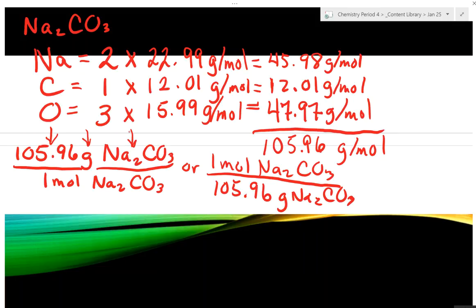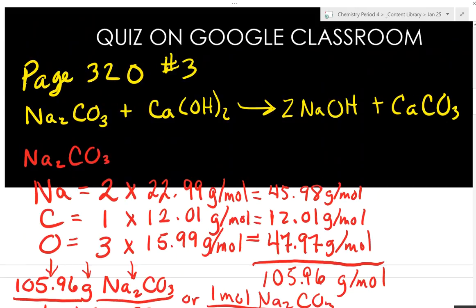You have two conversion factors up there. One takes you from moles to grams, the other one takes you from grams to moles. You have to do that for each of the substances - calcium hydroxide, sodium hydroxide, and calcium carbonate. Key thing here, you're only figuring out the molar mass for NaOH. Don't worry about the two. The two won't apply to it.